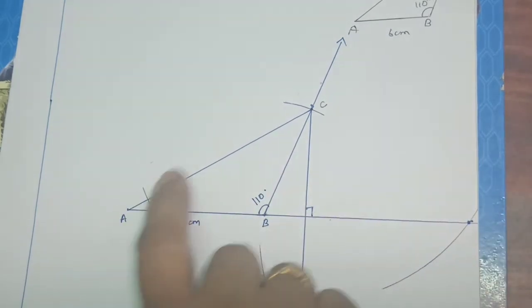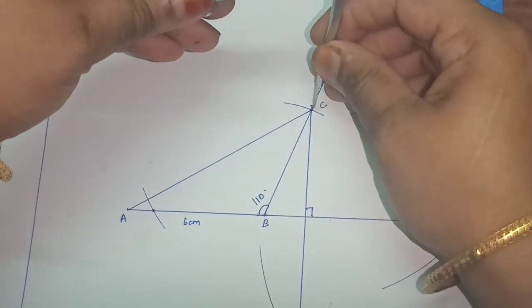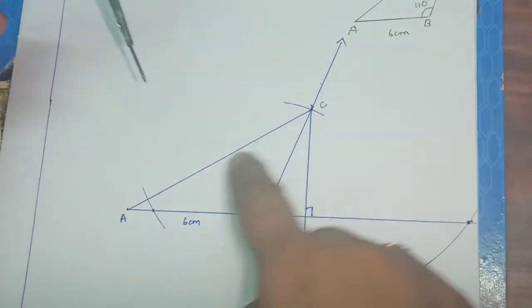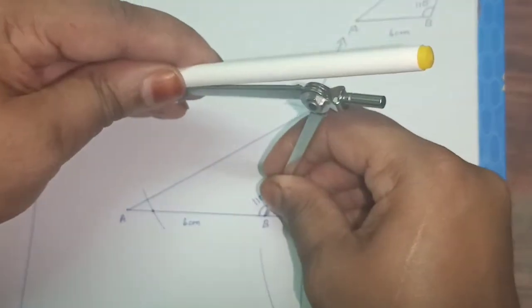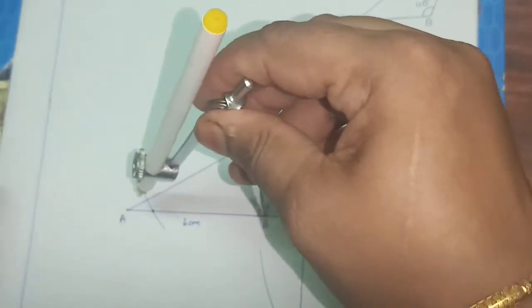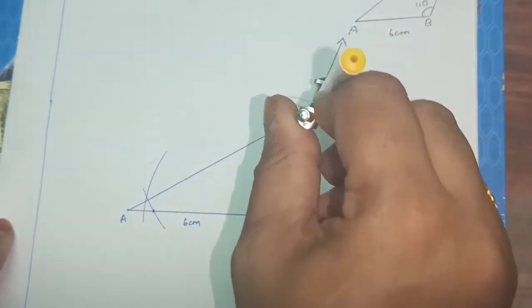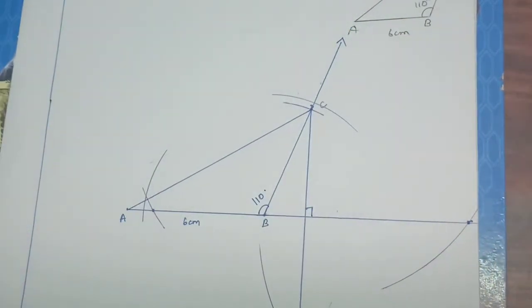Next, which side you are going to select? I am going to select AC. So I am going to keep the compass, which is the opposite vertex here, B. From B, I have to cut two arcs. From B, see, I am cutting one arc here and one arc here. So you can extend it.